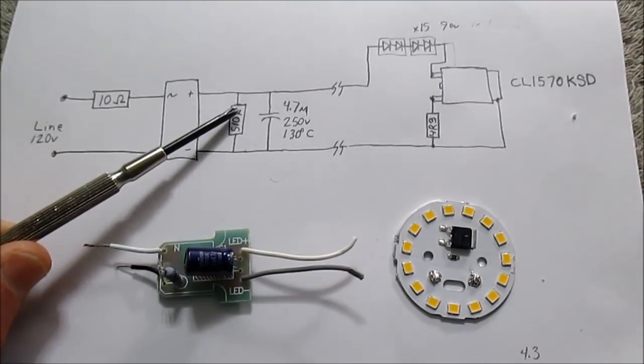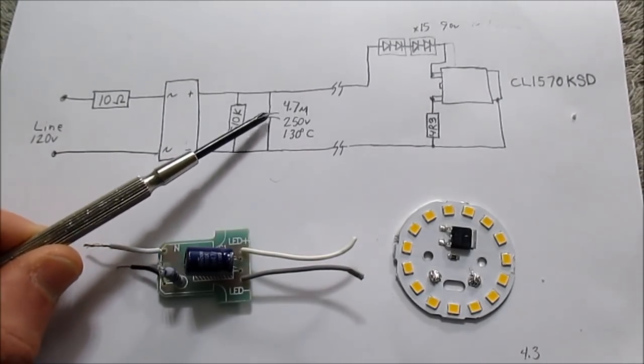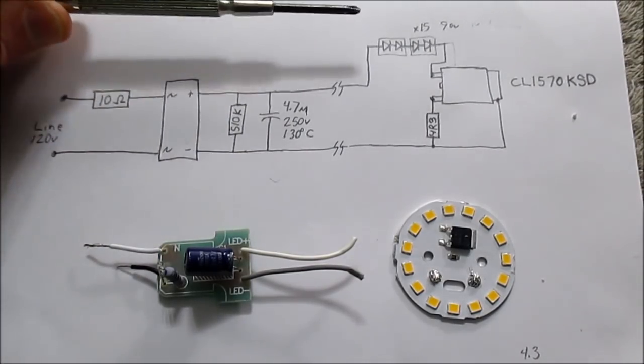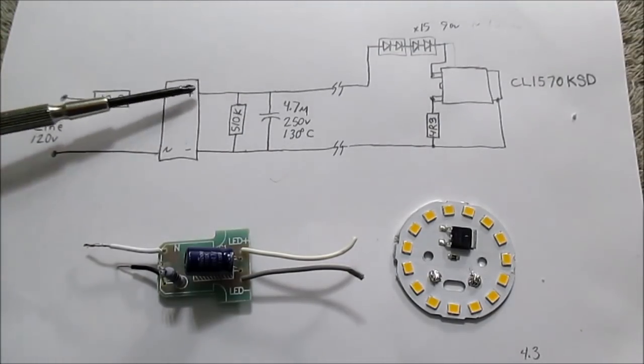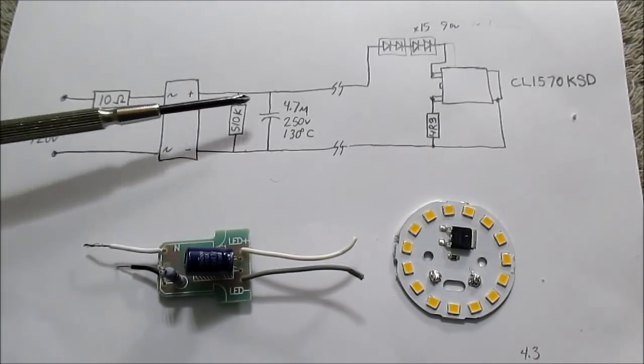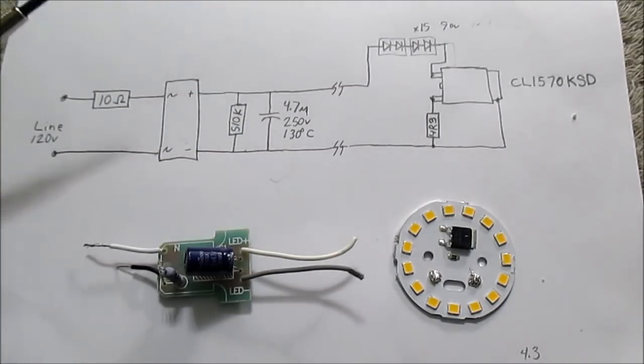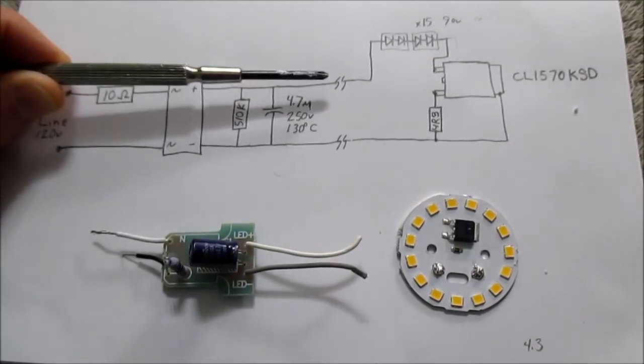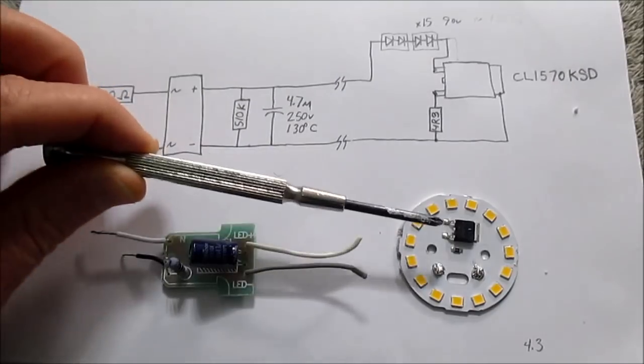510K ohm resistor just to make sure that's discharged. And also it might help on circuits that have some leakage. It helps keep the LEDs from turning on a little bit.